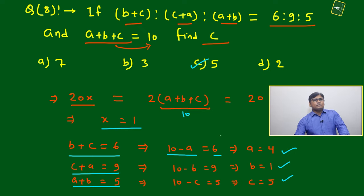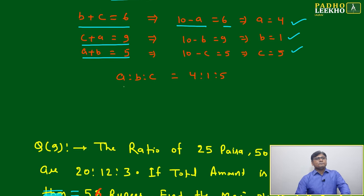Your question is solved - c equals 5. You will be able to mark it. But further, if you want to find the ratio among a, b, and c, then you will be able to find 4:1:5.